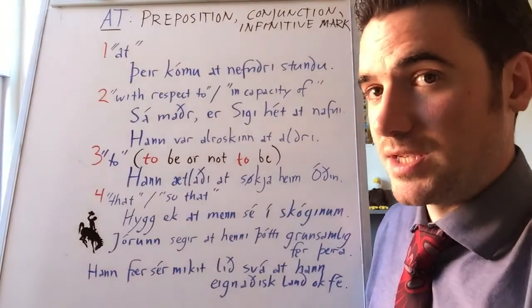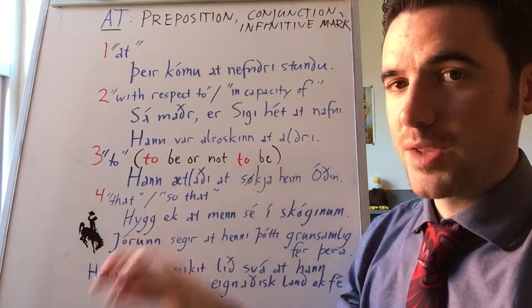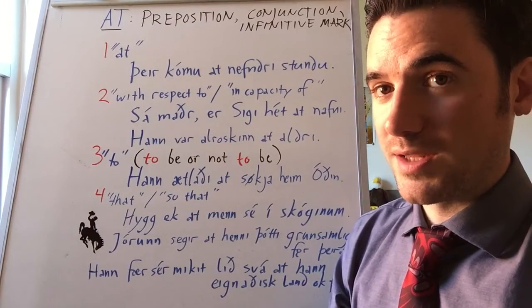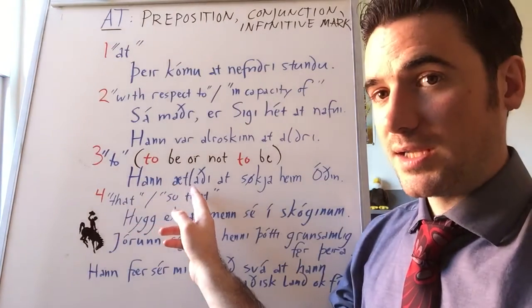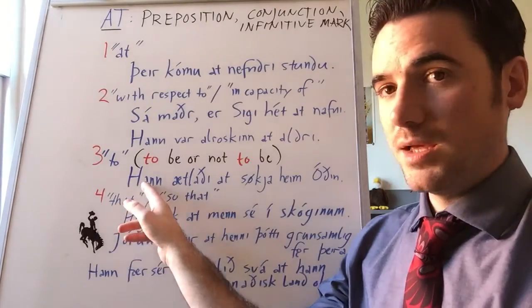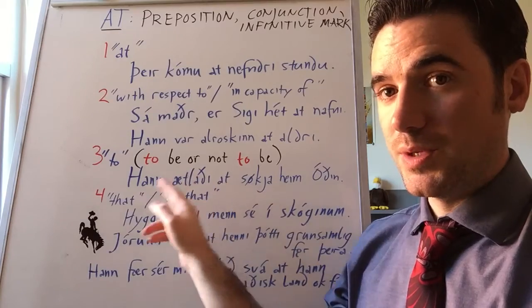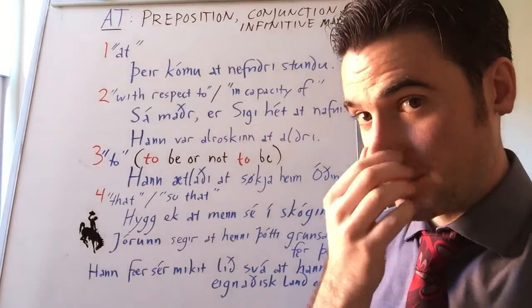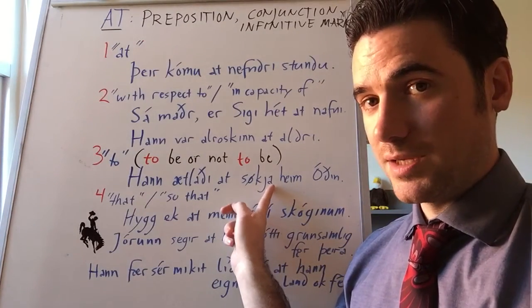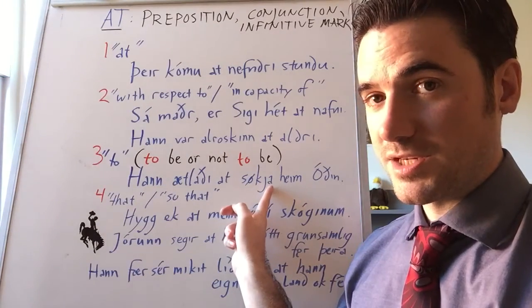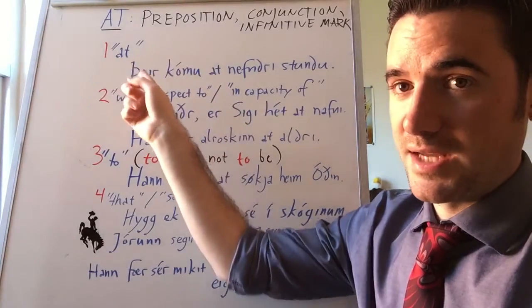That's 'at' as a preposition, but 'at' also functions in non-prepositional ways. 'At' translates the 'to' in an English phrase like 'to be or not to be.' When you have an infinitive in Old Norse, it is often used together with 'at', just like an infinitive verb in English is often used with 'to.' In a sentence like 'hann ætlaði at sœkja heim Óðin' — he intended to visit Odin at home — this 'at' translates English 'to.' Whenever you see 'at' in front of an infinitive verb, which almost always ends in -a in Old Norse and is the dictionary form, you know this is almost certainly this 'to' sense.